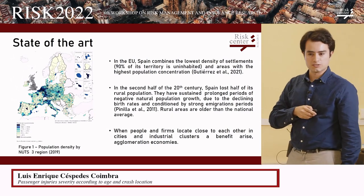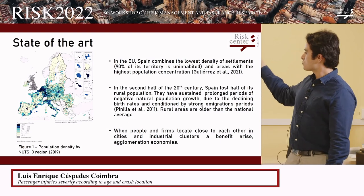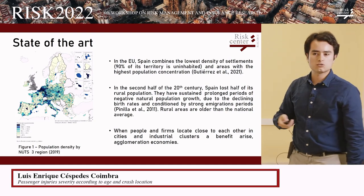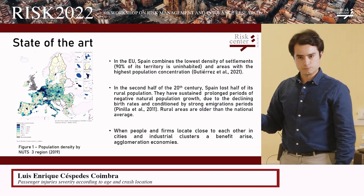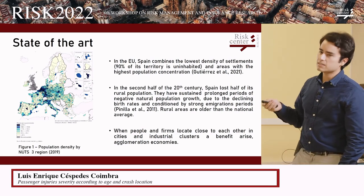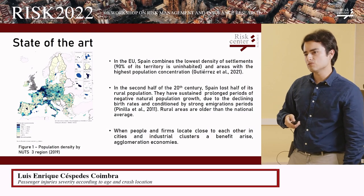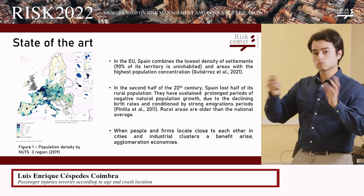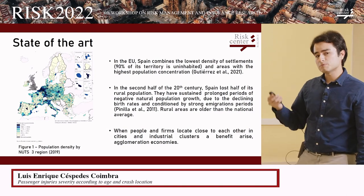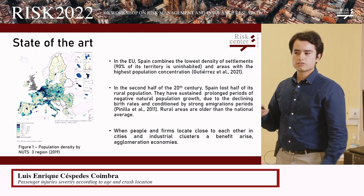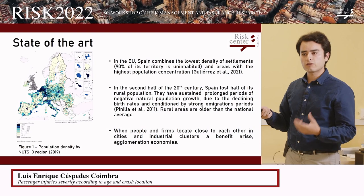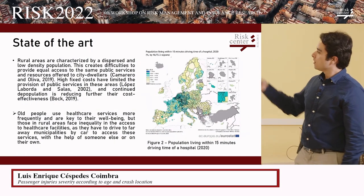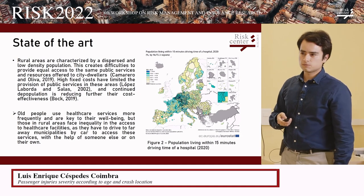Spain is an anomaly in the European context, combining one of the highest urban concentrations in some cities with 90% of its territory being uninhabited — which cannot be attributed to climatic conditions as in Scandinavia, but rather to its history. The rural exodus undertaken in the last half of the 20th century changed the population structure and left rural areas with an older average population. When people and firms locate close to each other, there are agglomeration economies which affect regulatory decisions on infrastructure. Institutions have problems giving people in rural areas equal access to services, reducing cost-effectiveness, and this is of great concern especially for older people with medical needs.